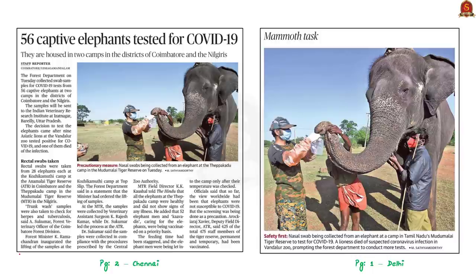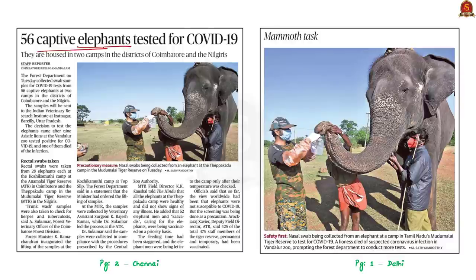Let us take up this article. We all know that there was a COVID-19 outbreak among the Asiatic lions in Vandalur Zoo in Tamil Nadu. So now as a precautionary measure, officials are testing 56 captive elephants. These 56 captive elephants are from different camps in Anamalai Tiger Reserve and Mudumalai Tiger Reserve. So let us see about these Tiger Reserves.